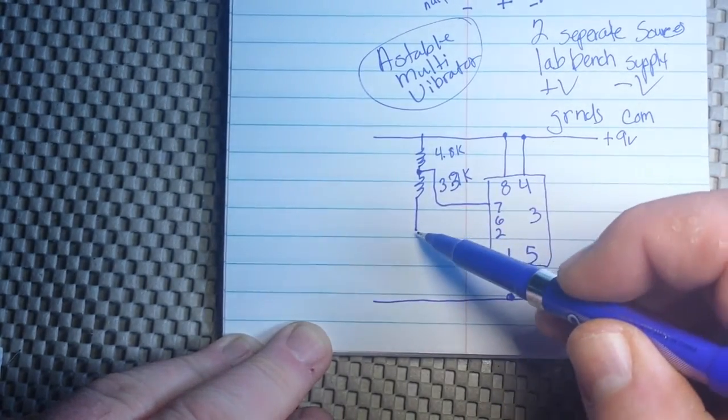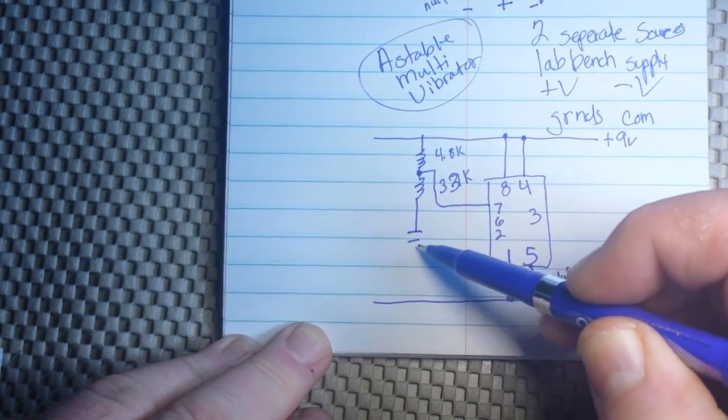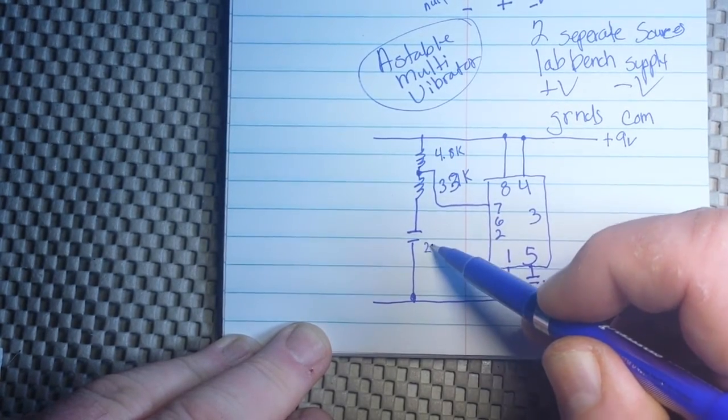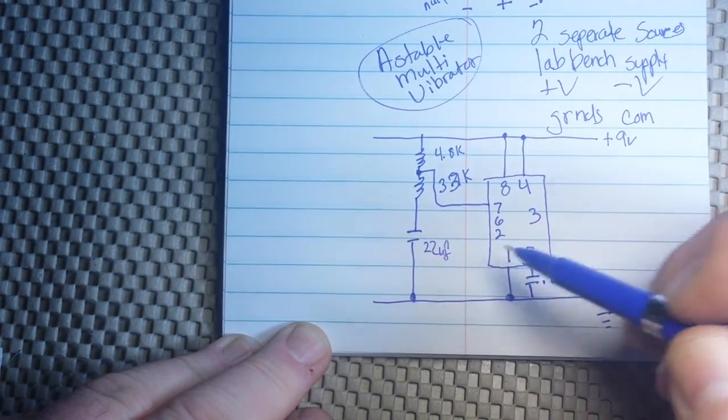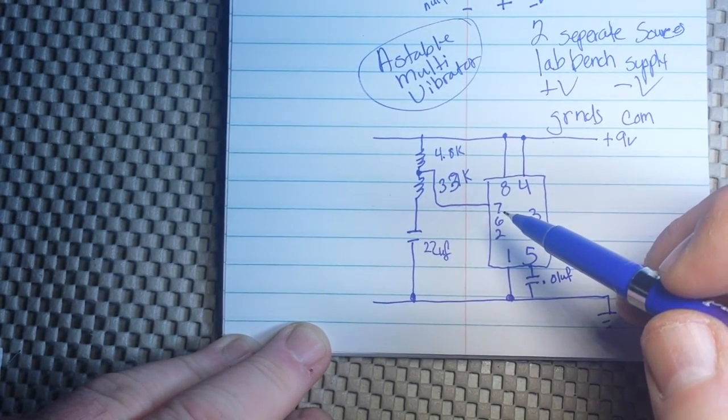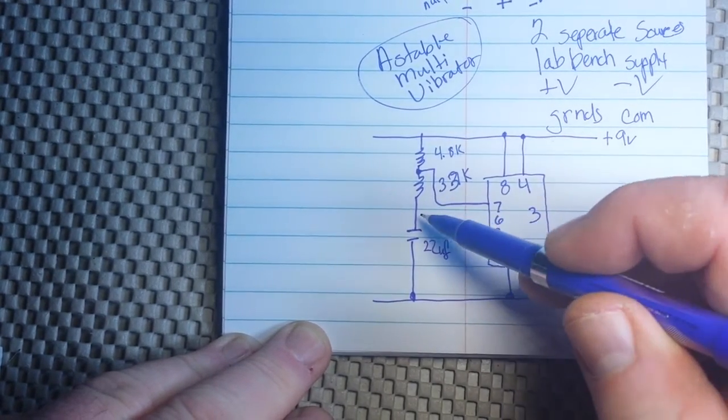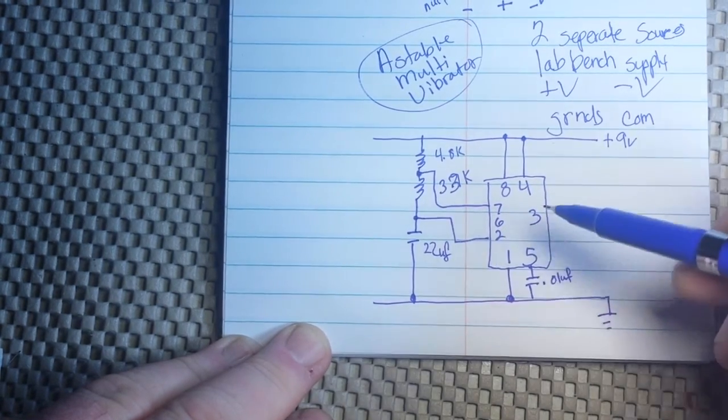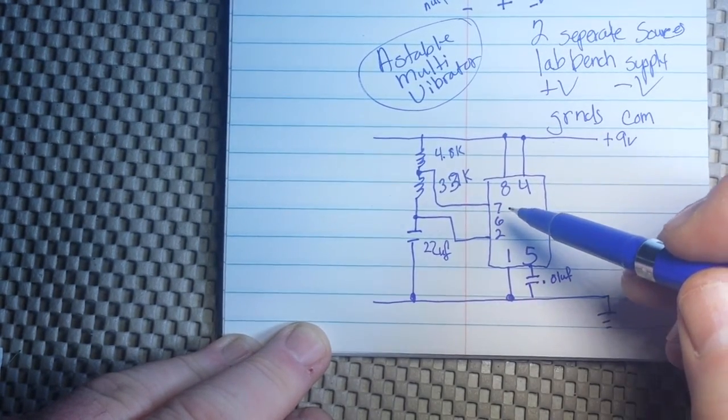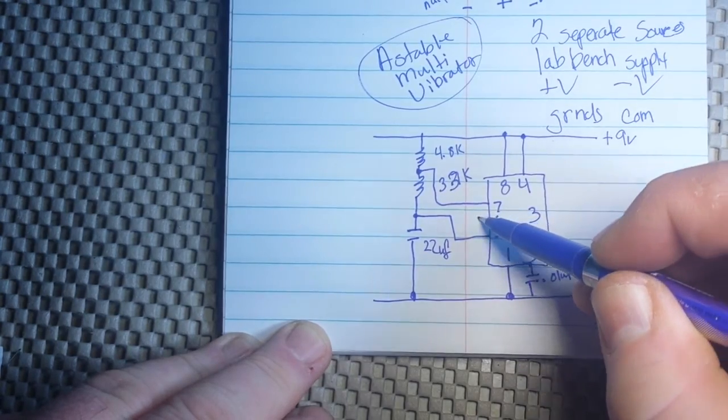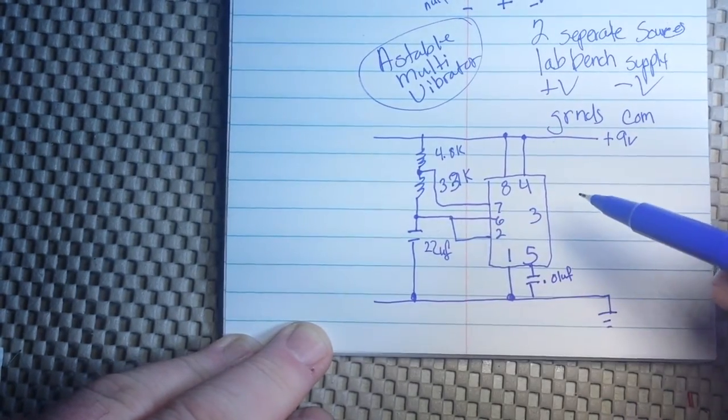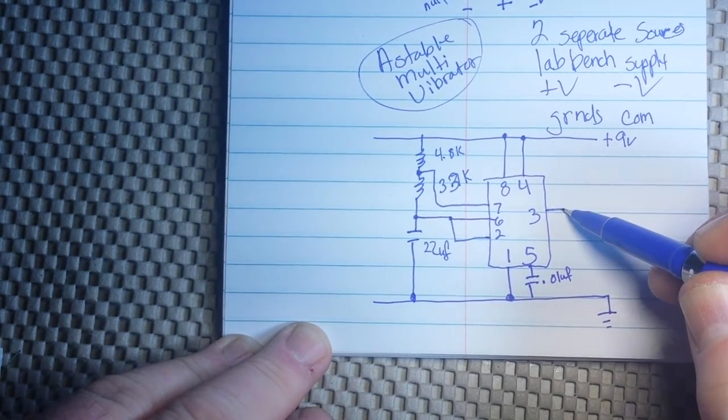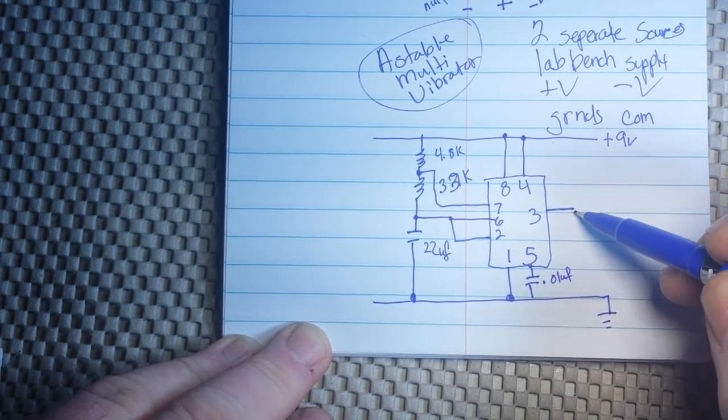And then we will bring in another capacitor. Drop that to ground. This will be 22 microfarad. And we'll do something like this. Bring that to pin two, which, of course, we're also going to connect to pin six.